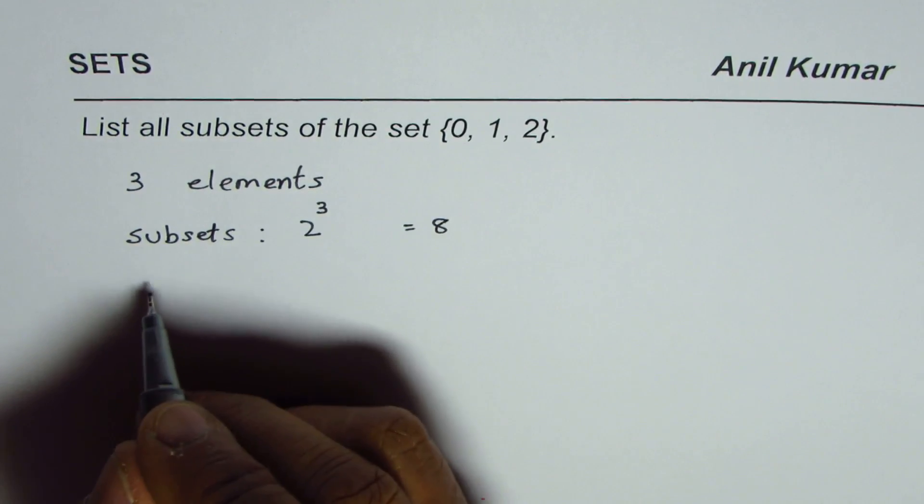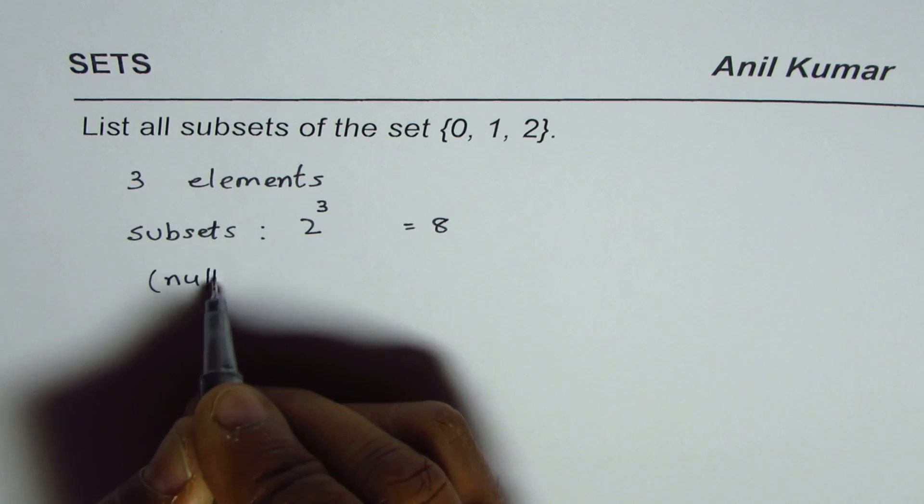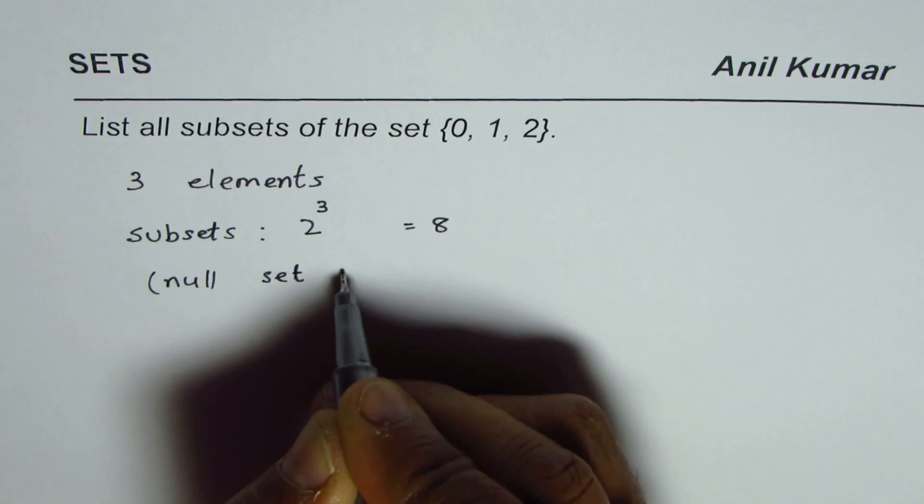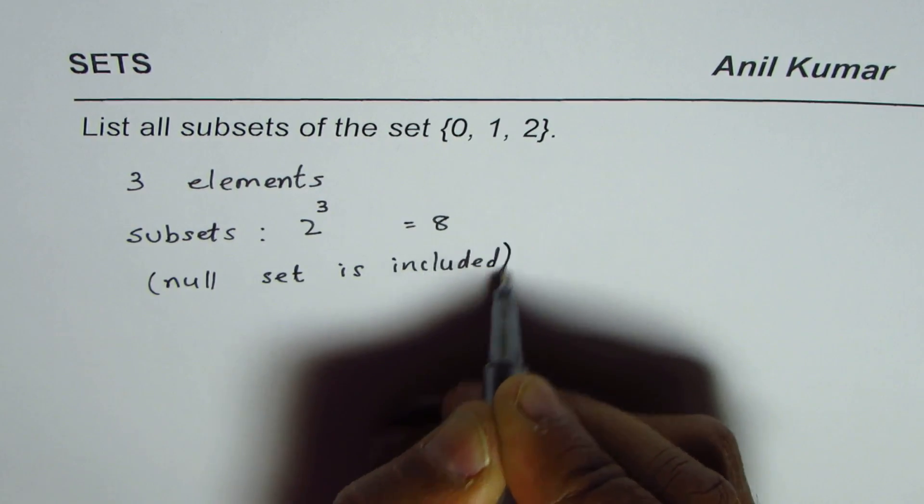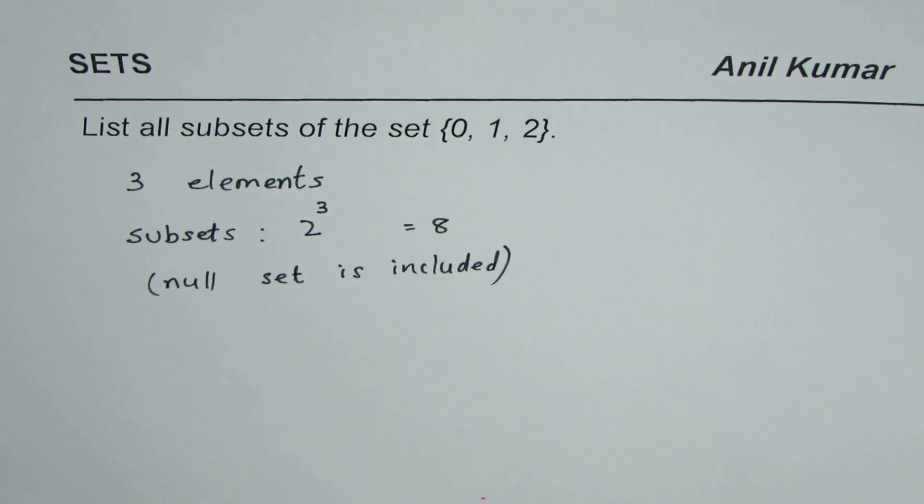This actually includes the null set also, so the null set is included. That is the answer.